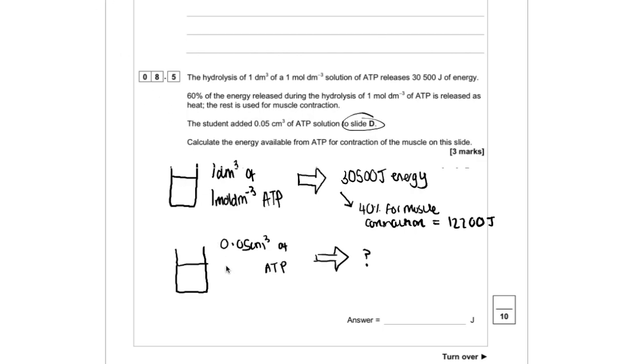But as with all biology questions, we need to pay attention to the units. So we can see in our example of how much energy we get from a certain amount of ATP, decimetres cubed is being used. Whereas in this one, centimetres cubed has been used. And so we need to be able to convert centimetres cubed to decimetres cubed or vice versa.